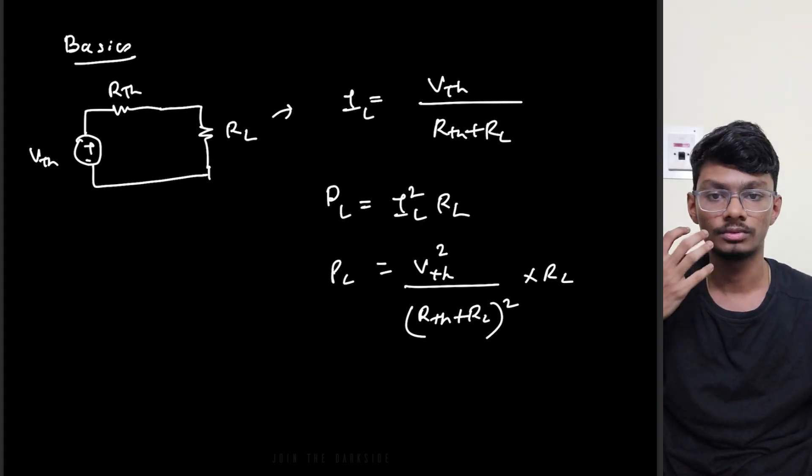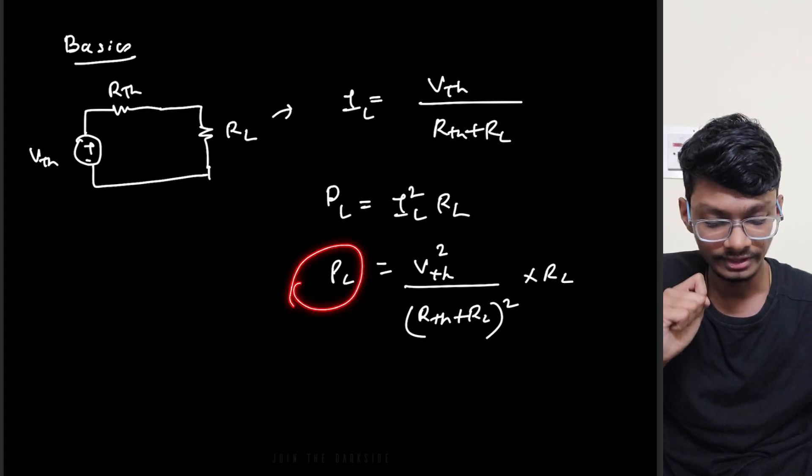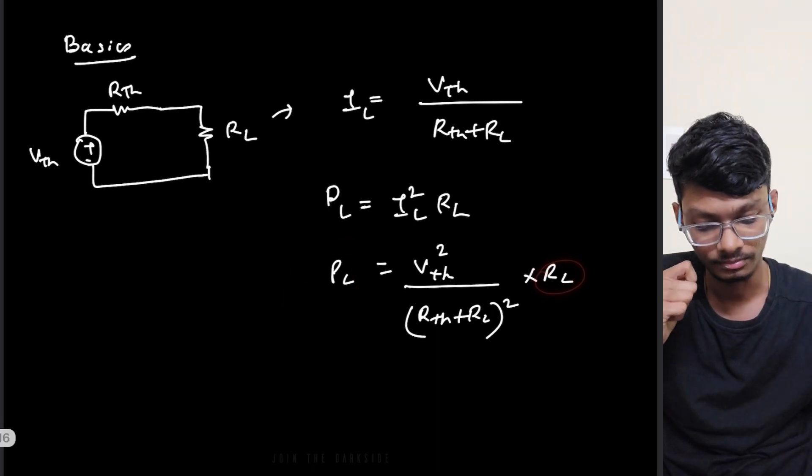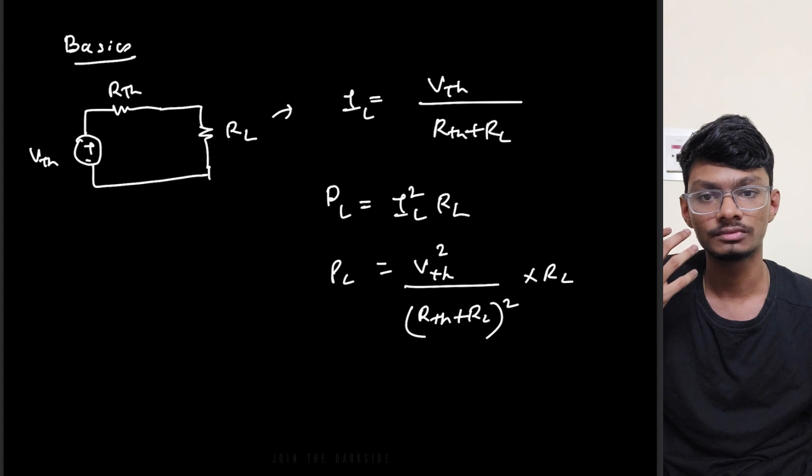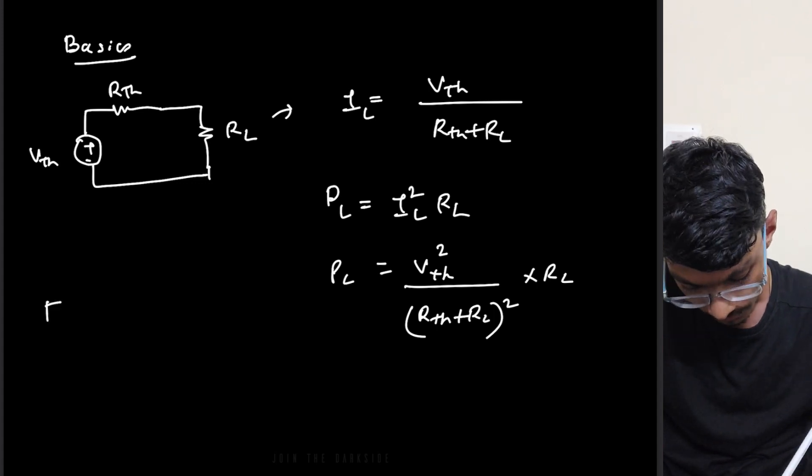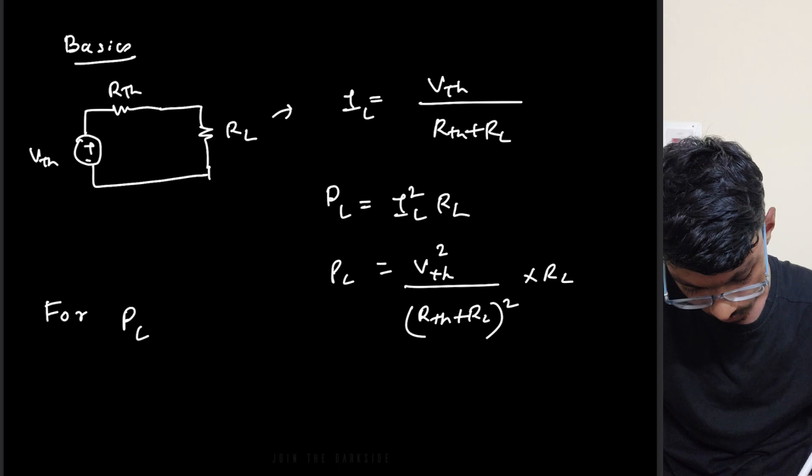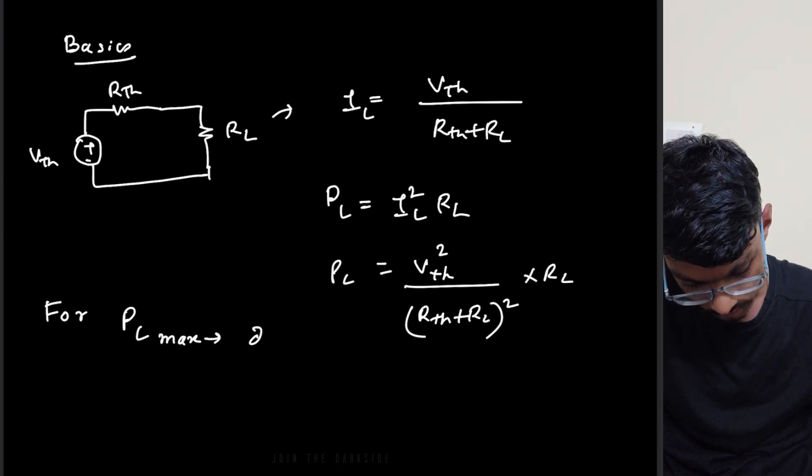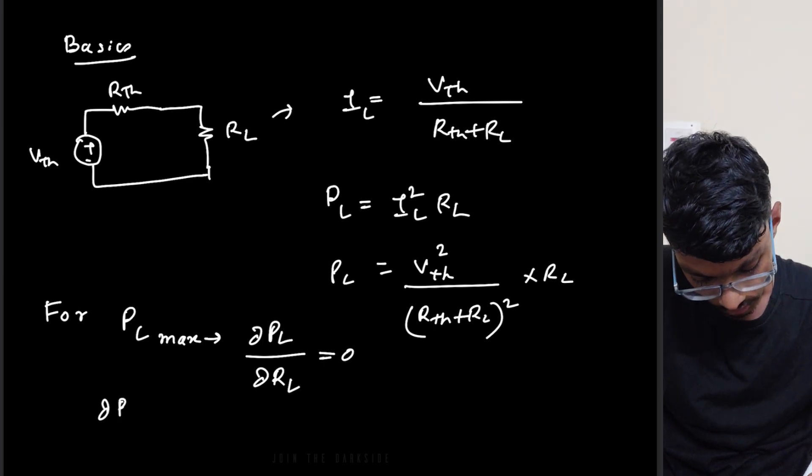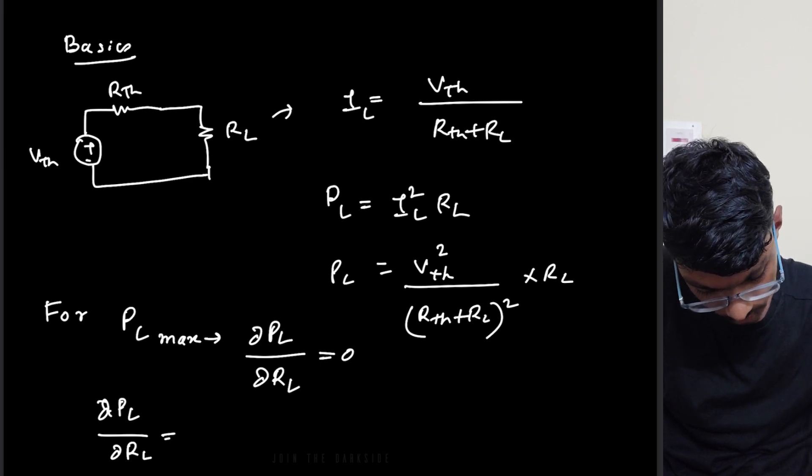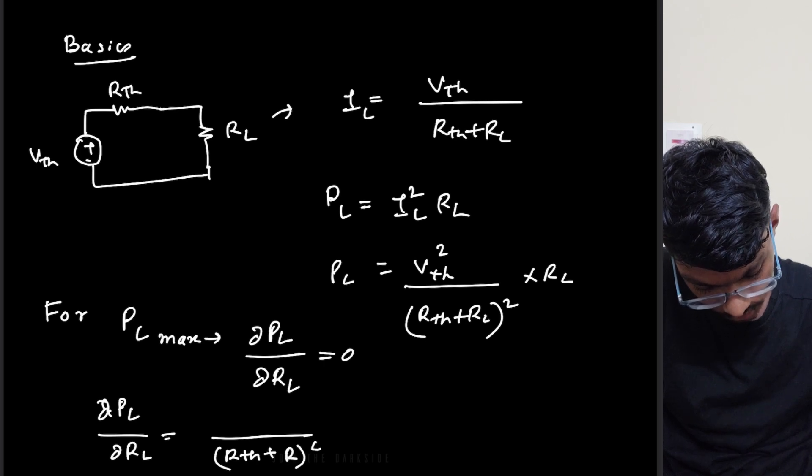Now for maximum power transfer, the derivative of this PL should be zero with respect to RL because we are varying the RL to get the maximum output power. That's why we will differentiate with respect to RL. So basically for PL max, dPL by dRL should equal zero. So now what's the differentiation of this? dPL by dRL equals to simply the denominator is (Rth plus RL) to the power 4.